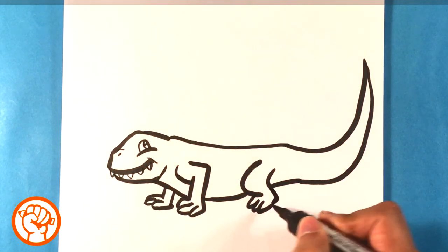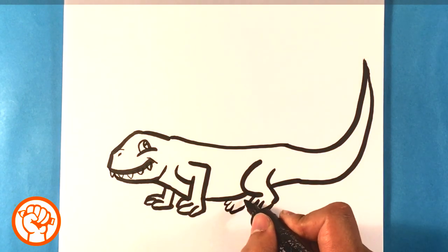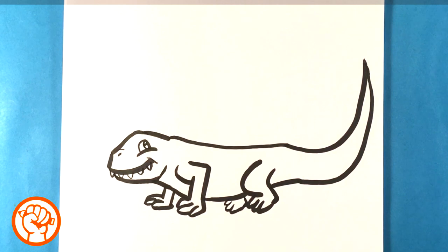Toe, toe, toe, just like the front foot. Then you can do the same thing with the back foot. This one's only going to have the toes showing.